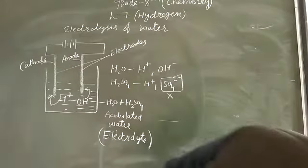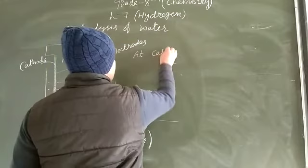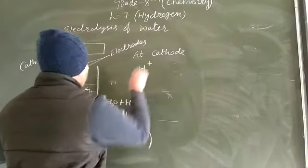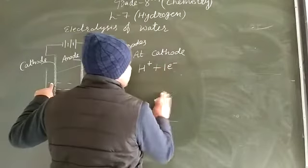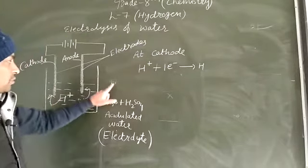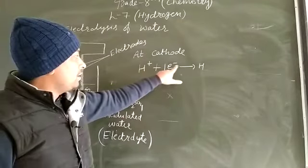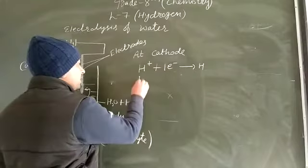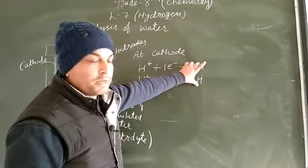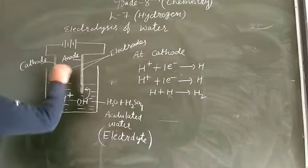Now the reactions take place at the cathode and anode. At the cathode: H⁺ is having the deficiency of one electron, so it goes towards the cathode and gains one electron, becoming neutral — that becomes H. Similarly, another H⁺ ion gains one electron and becomes neutral. When two H atoms are formed, they combine together to form H₂ gas. This means H₂ gas is liberated at the cathode.